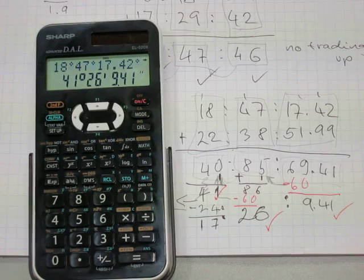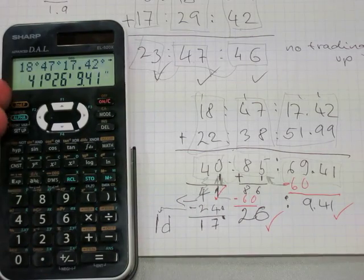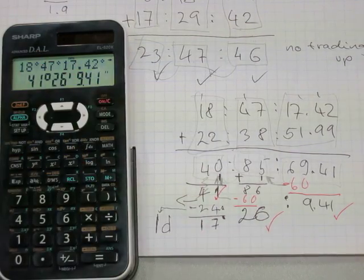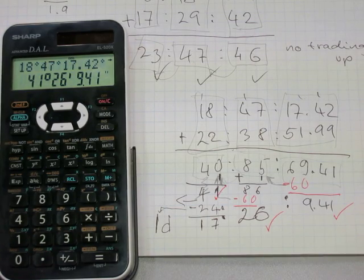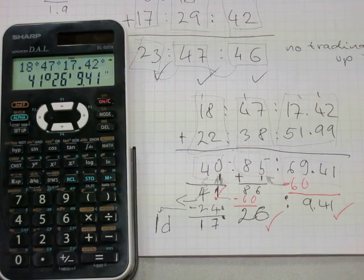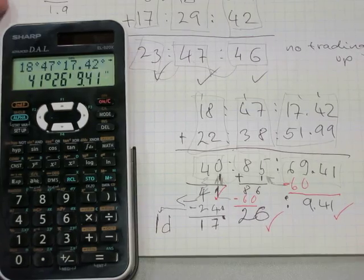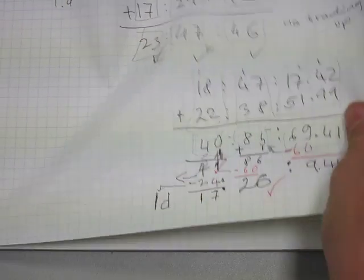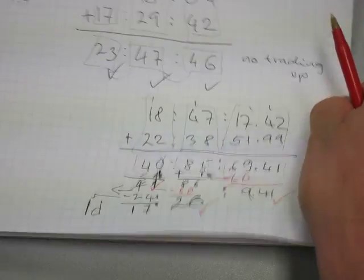The calculator cannot convert the 41 hours into days, but you can by trading 24 hours for one day — that's the only difference between the calculator's result and what you can do on paper. That concludes addition. Let's do subtraction.